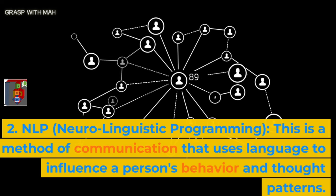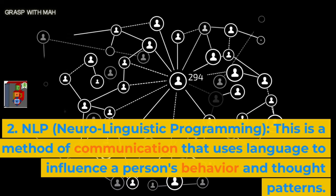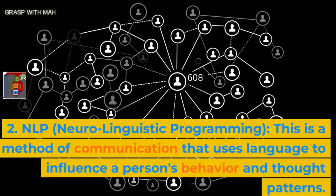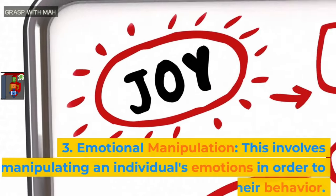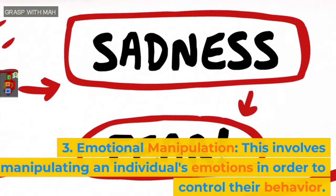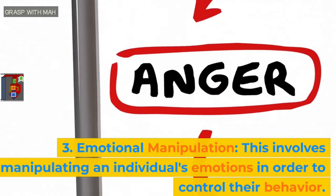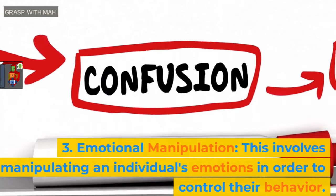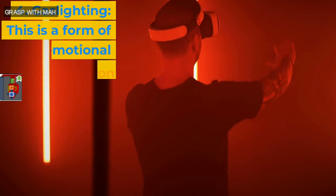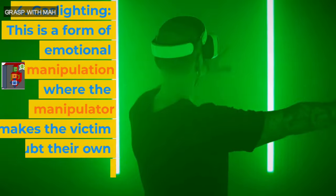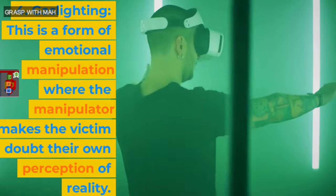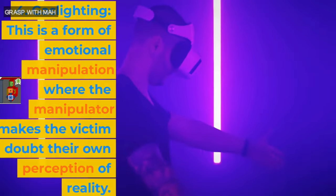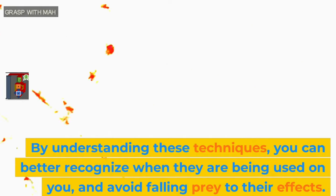a method of communication that uses language to influence a person's behavior and thought patterns. 3. Emotional Manipulation — manipulating an individual's emotions in order to control their behavior. 4. Gaslighting — a form of emotional manipulation where the manipulator makes the victim doubt their own perception of reality. By understanding these techniques, you can better recognize when they are being used on you and avoid falling prey to their effects.